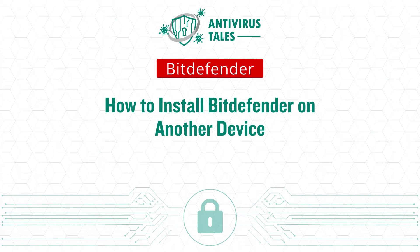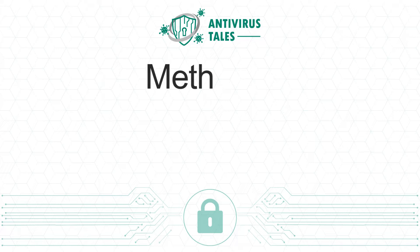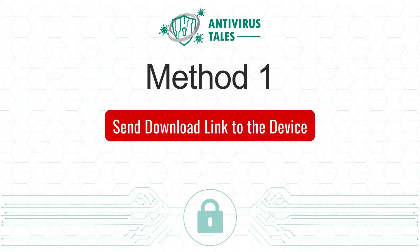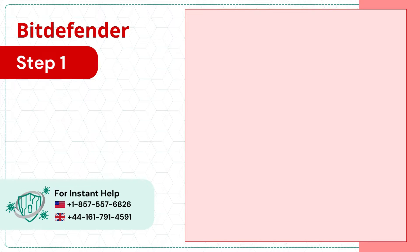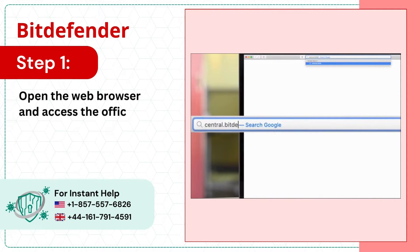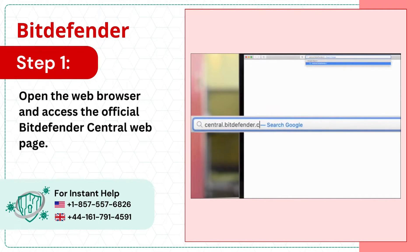How to Install Bitdefender on Another Device: Two Quick Solutions. Method 1: Send Download Link to the Device. Step 1: Open the web browser and access the official Bitdefender Central web page.